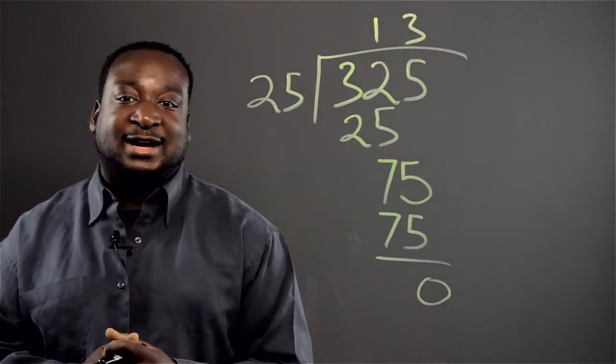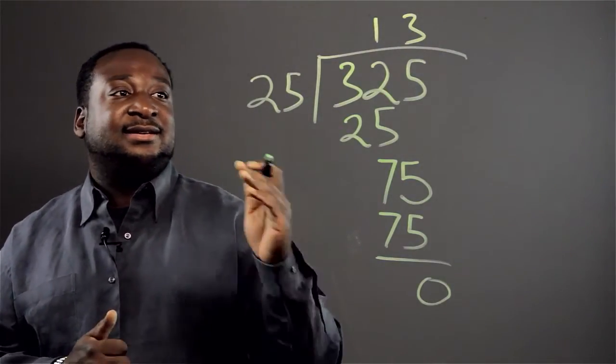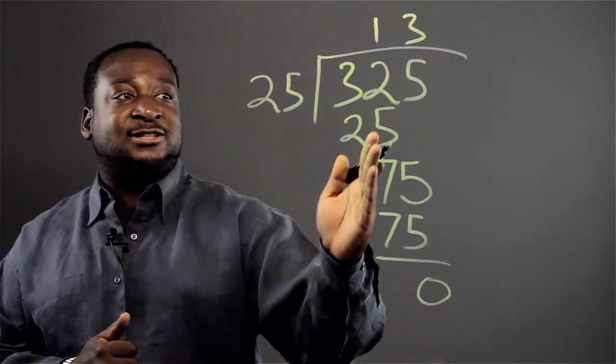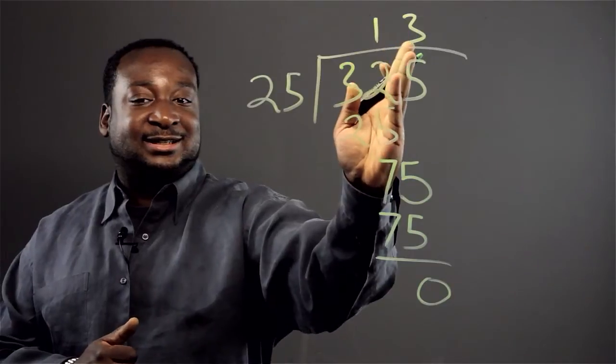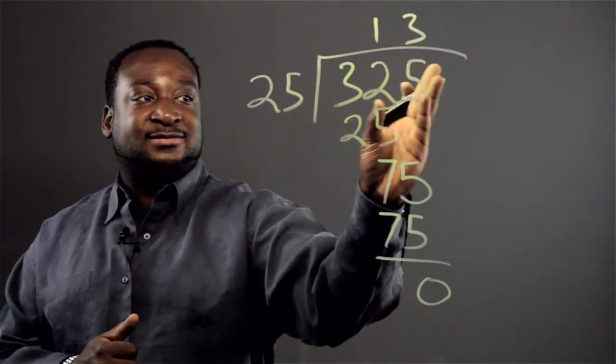And that's how you divide by two digits. When divided by two digits, you always group the dividend by two. Look at the first two and then the next.